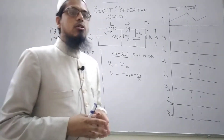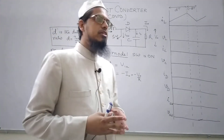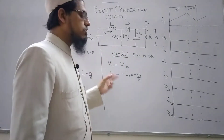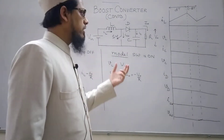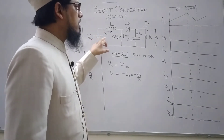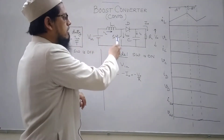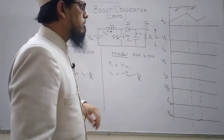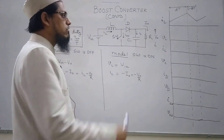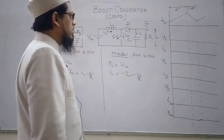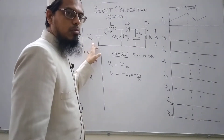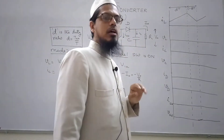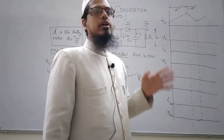The operation of the boost converter has already been discussed in the previous lecture. Let us quickly summarize the various equations associated with a boost converter. This is our ideal boost converter. It has got an inductor, a switch, a diode, a capacitor to filter out the voltage ripple, and a purely resistive load connected to the output. The basic operation of the boost converter is to enhance the input voltage level to a level compatible to the requirement of the load.